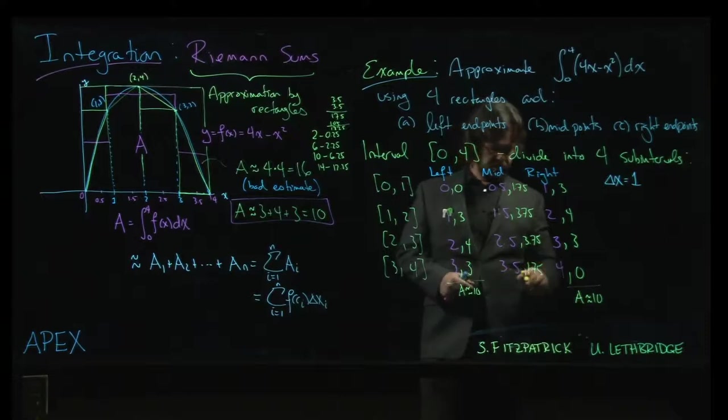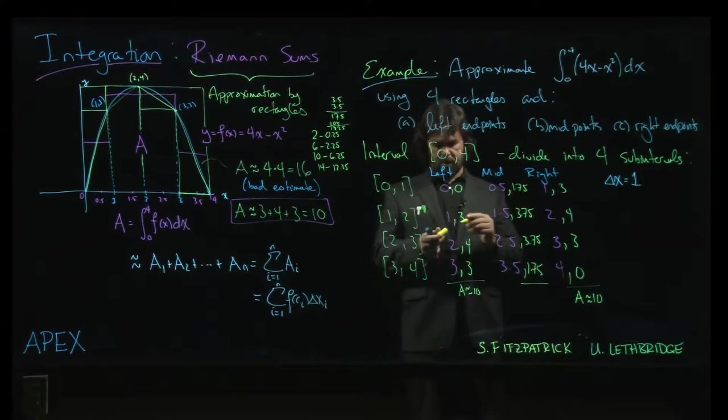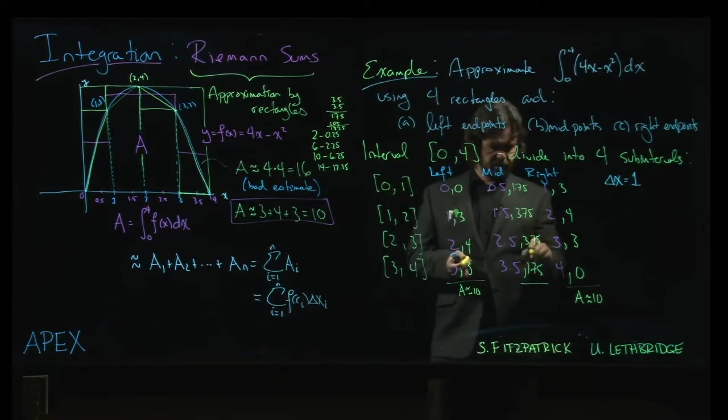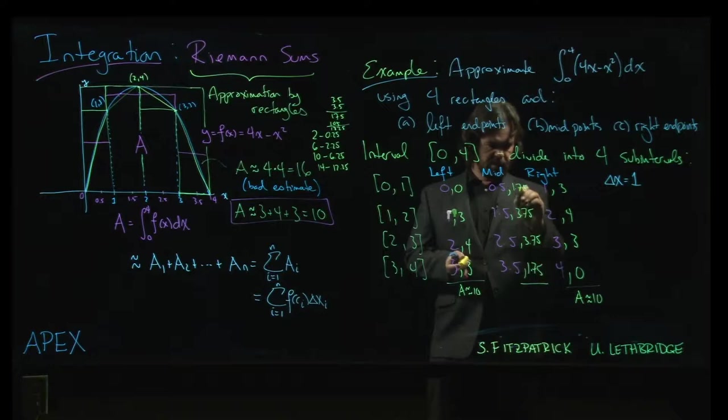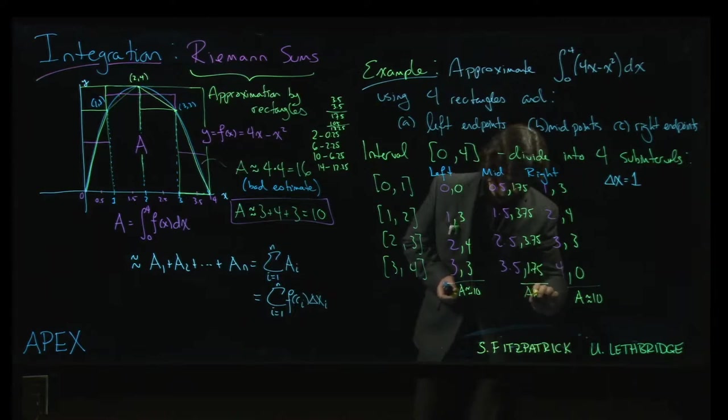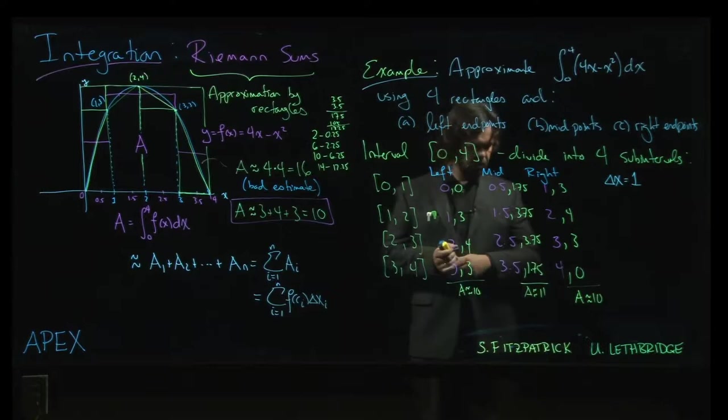So we add those all up and what do we get? Those two add to give me 7.5, those two add to give me 3.5, so 3.5 plus 7.5 gives me 11 for the approximation using midpoints.